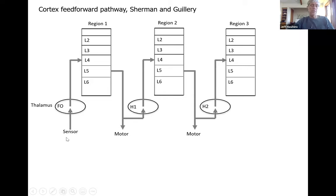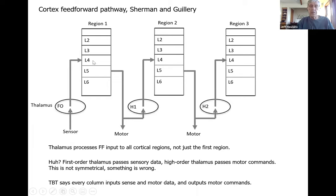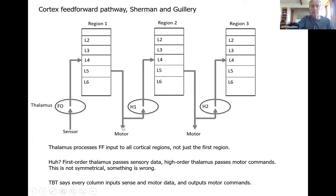This picture raises a problem: what's being passed between region one and region two appears to be a motor command sent through the thalamus, but the first region is getting sensory input. So this is asymmetrical and doesn't make sense — one region processing sensory data and another processing motor data. The thousand brain theory says every column needs both sensory and motor input, and has to generate behaviors. In this picture every region has layer five cells for motor output, but here we're showing the first region gets sensory and the next gets motor. Something's clearly wrong.